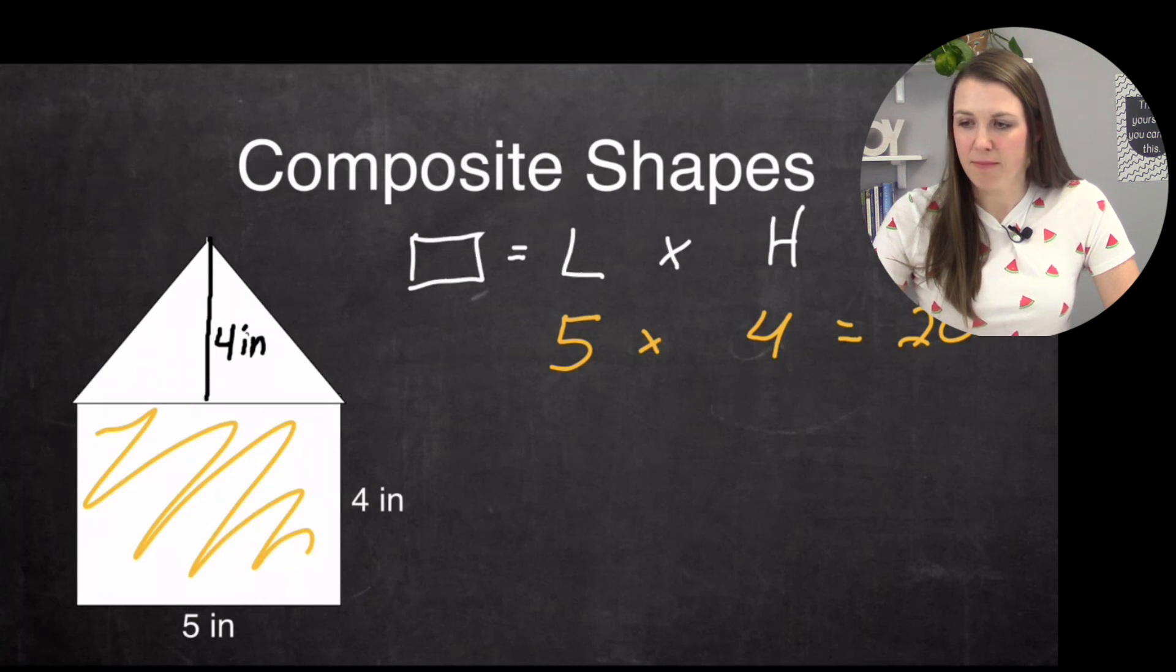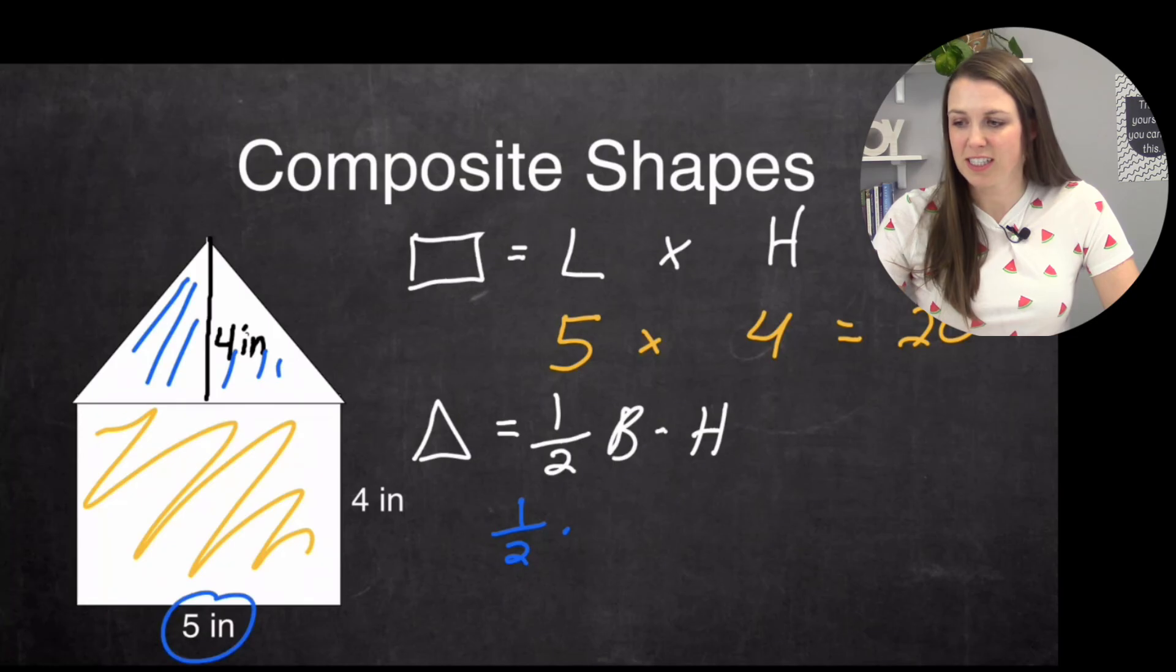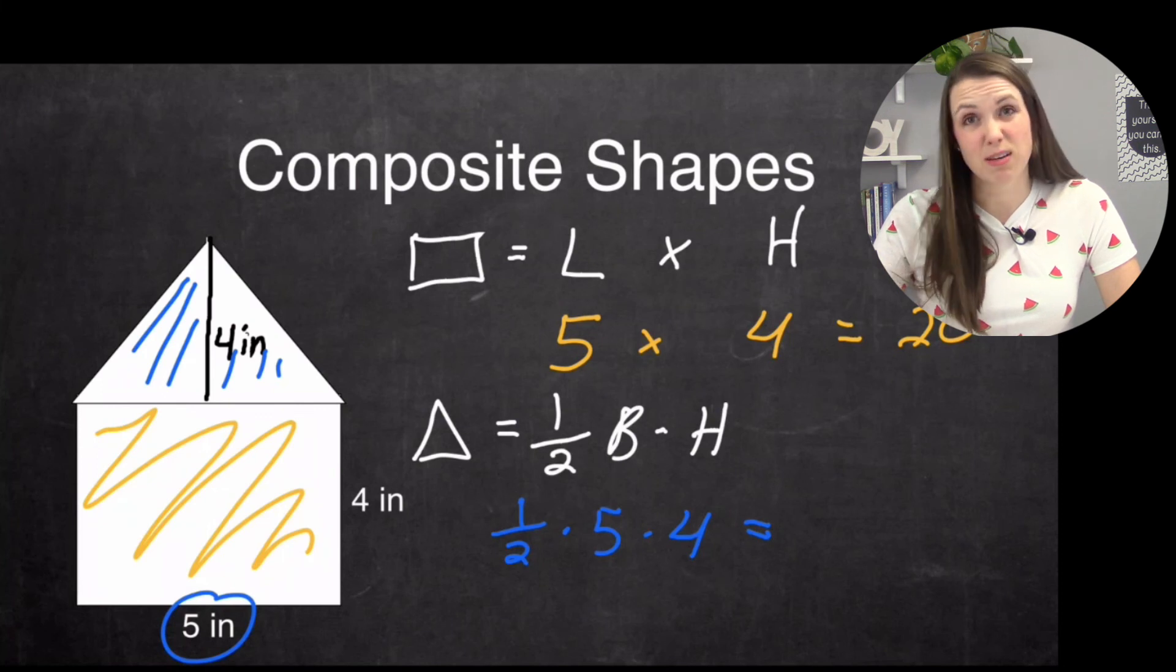And now I have my little top part. So to find my triangle, it is going to be one half base times height. So I have one half base, my base is right here, which is the five times four. Now, to me, if I'm doing this just mental math, I can do one half times five, but that brings me down to two and a half.